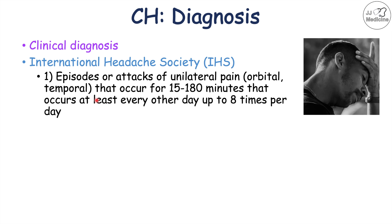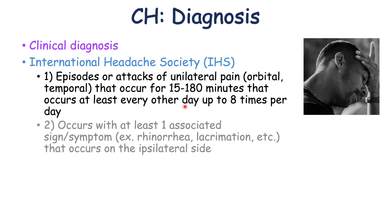The IHS criteria require episodes of unilateral pain in and around the eye or temporal area lasting 15 to 180 minutes, occurring at least every other day or up to eight times per day. These episodes must occur with at least one associated sign or symptom such as rhinorrhea or lacrimation, and these signs and symptoms must occur on the ipsilateral side — the same side as the pain.